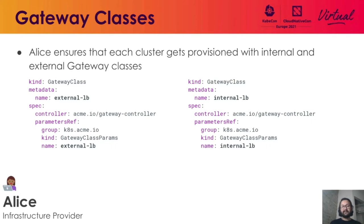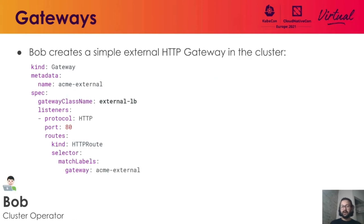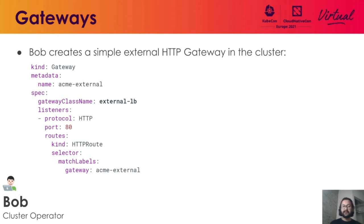Once these gateway classes are present inside the cluster, Bob takes the external LB gateway class and creates a gateway resource. Behind the scenes, when a gateway resource is created, an external load balancer is provisioned for the cluster. The load balancer is listening on port 80 for HTTP requests, and as requests come in, those requests are matched based on HTTP route resources. Notice how we have a selector label here with the key of gateway and the value of ACME external — this would feel similar to how the Service resource has a label selector for pods.